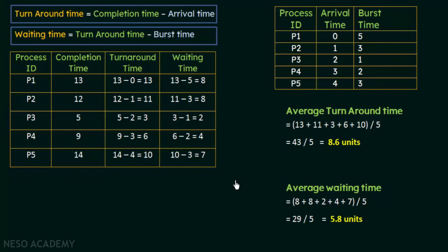It may seem a bit lengthy, but I have explained it in a very detailed way so that you can understand it clearly. You can practice these problems more and more — it will help you solve them quickly. Just keep in mind the different things to pay attention to when solving round robin scheduling problems. As long as you are careful, you will be able to solve these problems without any issues. I hope this was clear to you. Thank you for watching and see you in the next one.